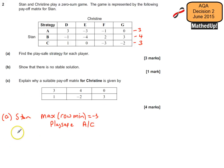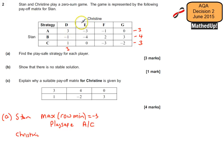Now we want to do a similar thing for Christine, however it's going to be the opposite way around. Instead of finding the minimum of each row, we want to find the maximum of each column. The maximum for column D is 3, because that's the worst case scenario for Christine — if she plays strategy D her worst case is a loss of 3. The maximum for column E is 0, representing a loss of nothing.